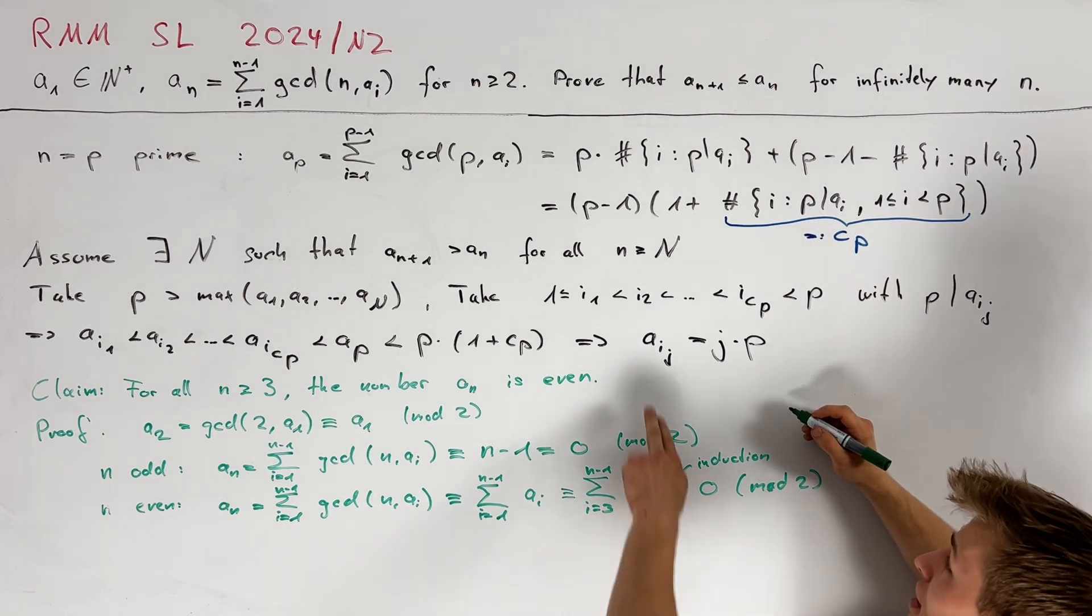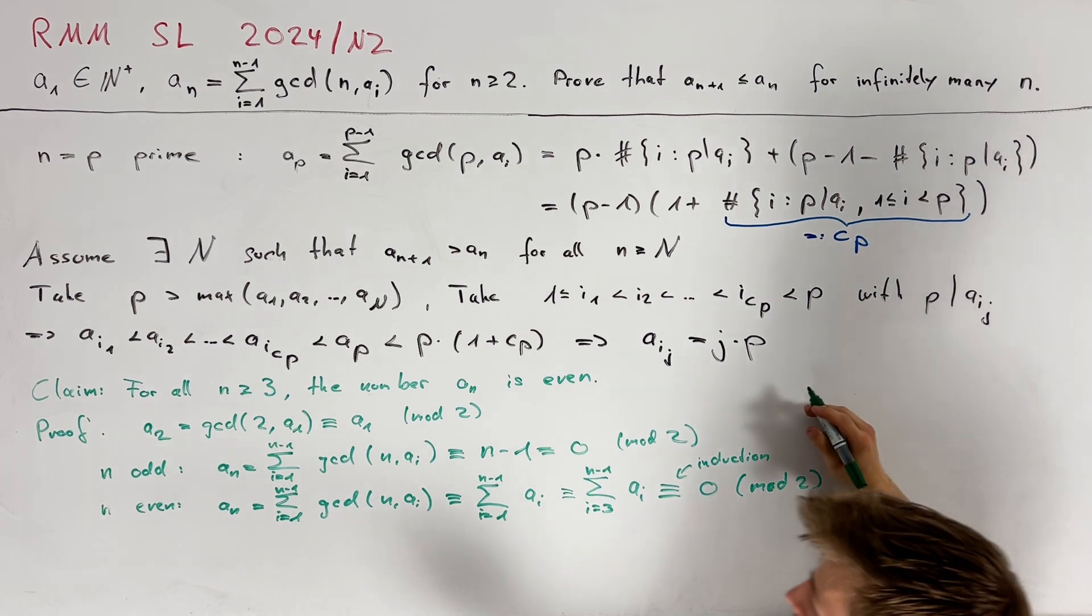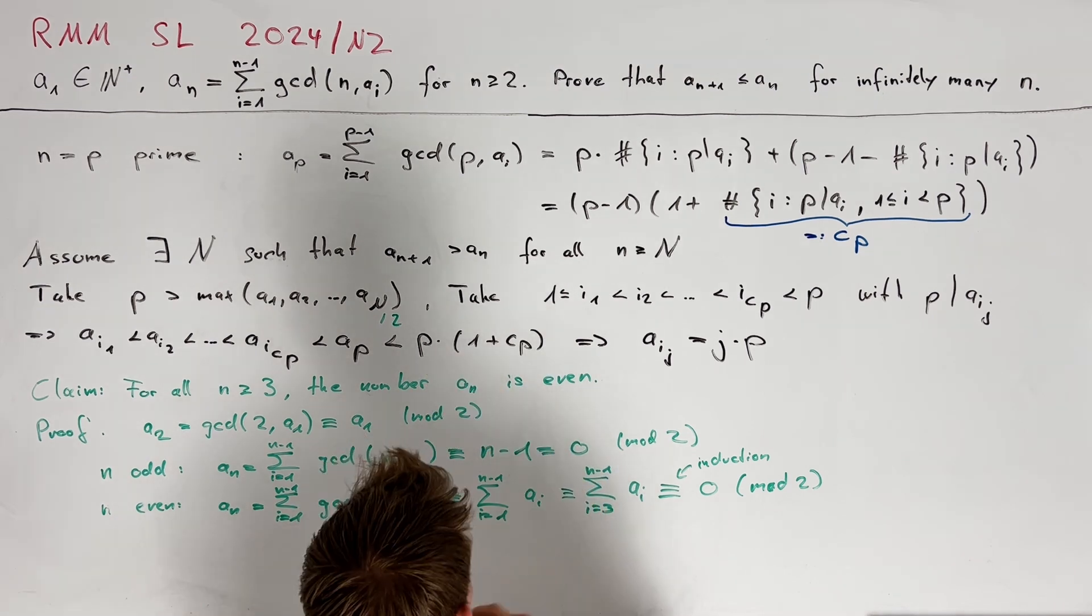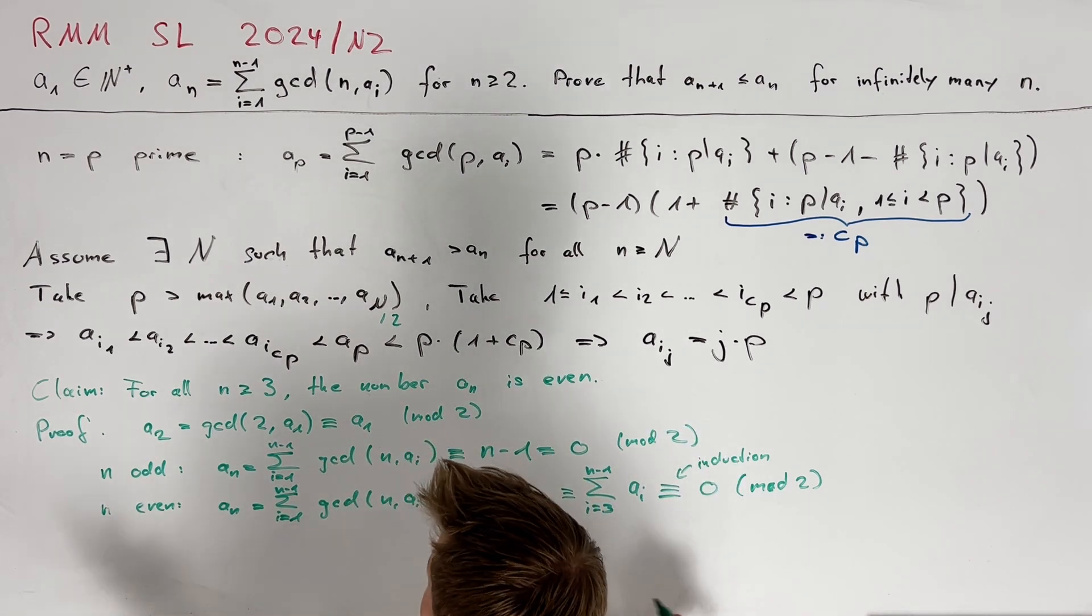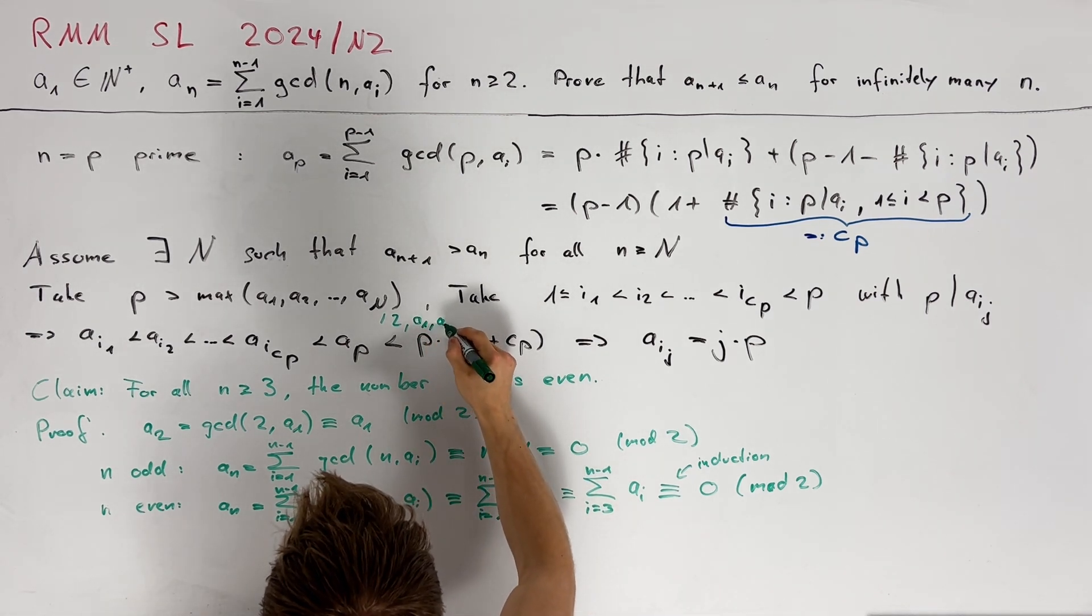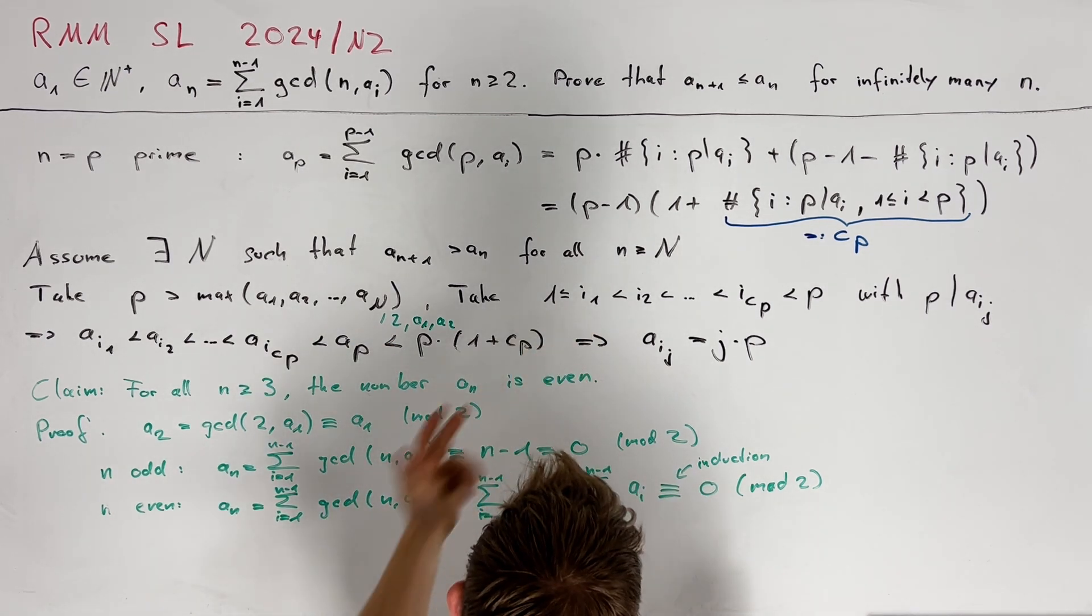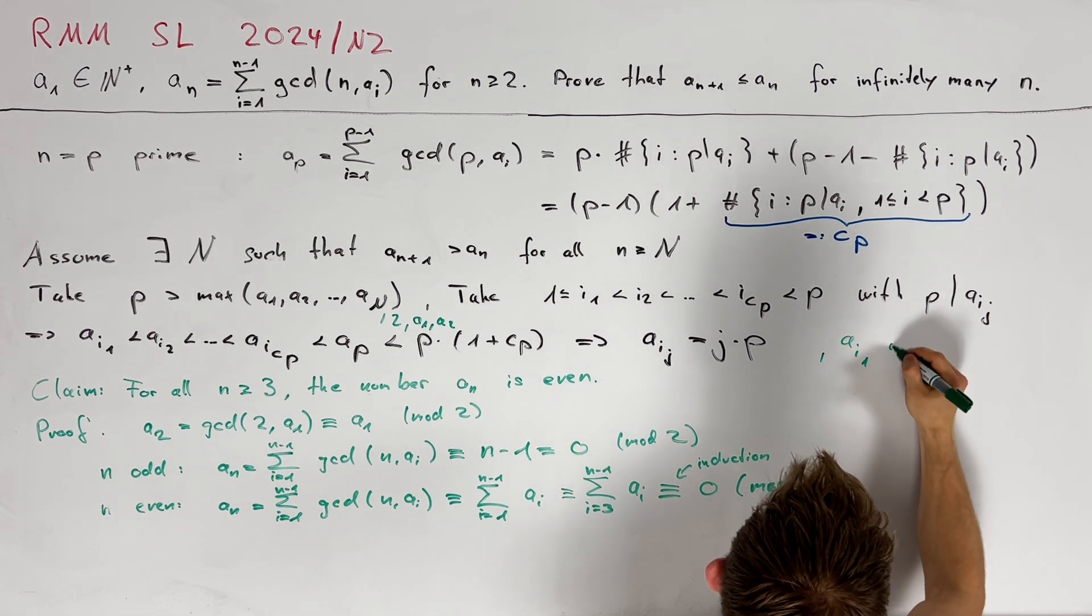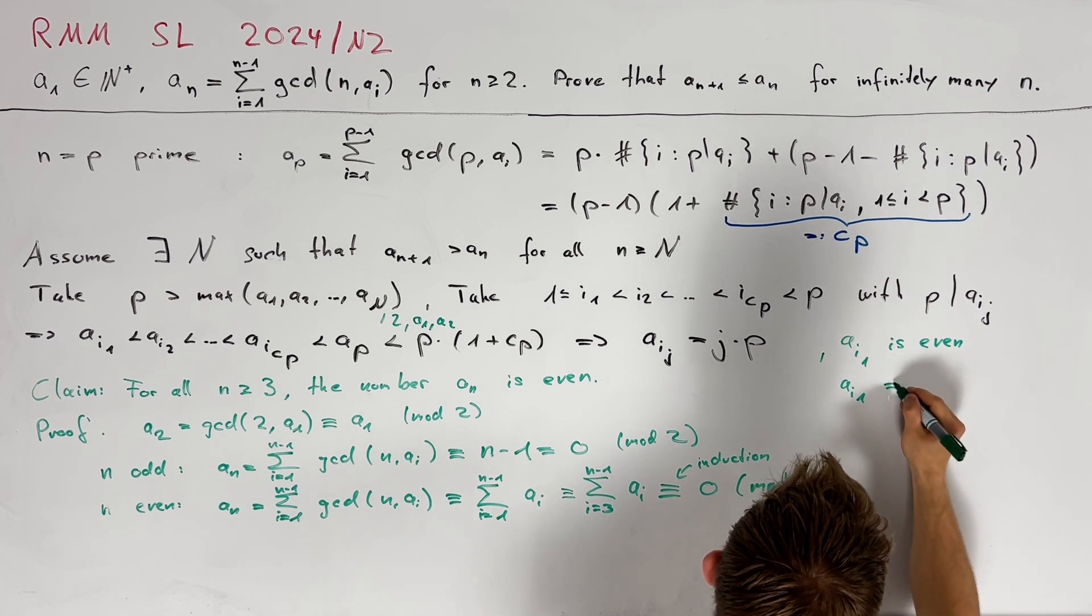As opposed to this we know that a_{i_1} is equal to p and now we want to bring this to a contradiction. First of all, let's take p also greater than 2 such that p is an odd prime number. Moreover we want that i_1 is not equal to 1 or 2 and therefore let's just also write down the numbers a_1 and a_2 into this maximum to make sure that i_1 is indeed greater than 2 and therefore we get that a_{i_1} is even and especially a_{i_1} is not equal to p.